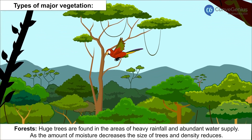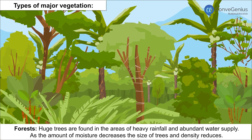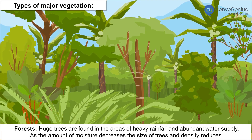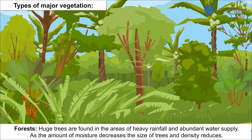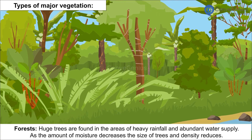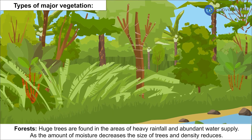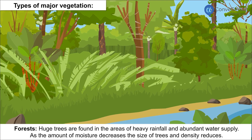Forests: Huge trees are found in areas of heavy rainfall and abundant water supply. As the amount of moisture decreases, the size of trees and their density also reduces.